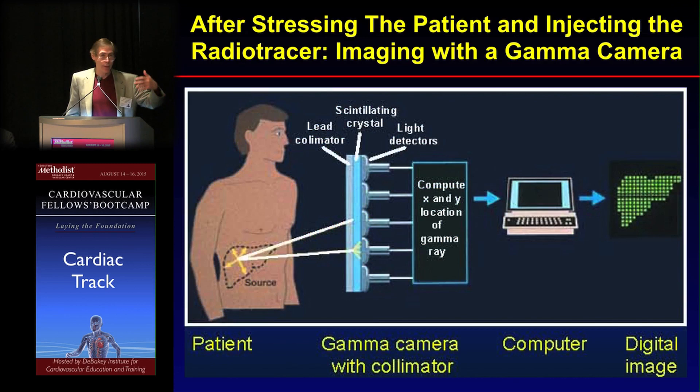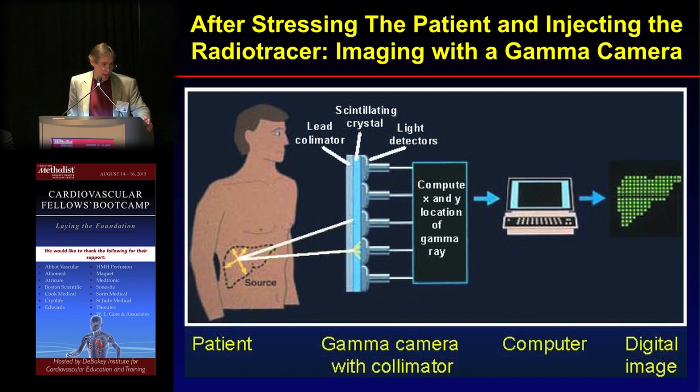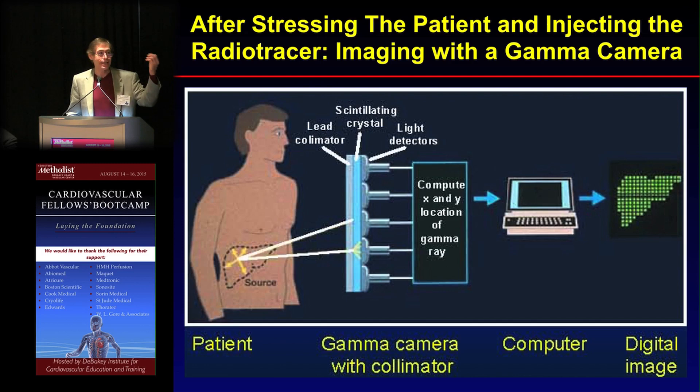Once we stress the patient and inject the radiopharmaceutical, we have to image that patient. Because gamma rays can get out of the body, they hit a lead collimator so that only photons parallel to the organ being imaged enter the sodium iodide crystal. When the photon hits the crystal, it causes a scintillation — a little bit of light.